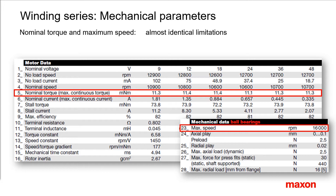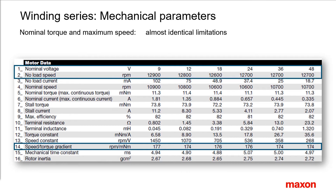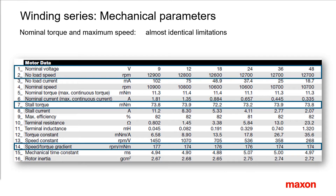How does the speed-torque line change over the winding series? The speed-torque gradient is almost identical. Each winding has its particular nominal voltage, selected to give a similar no-load speed for all the windings. Accordingly, the stall torque is very similar too. Again, from a mechanical point of view, we get a very similar behavior for the different windings.